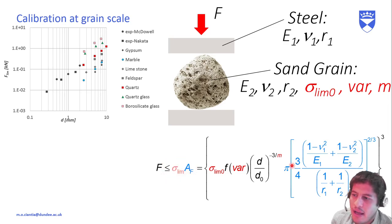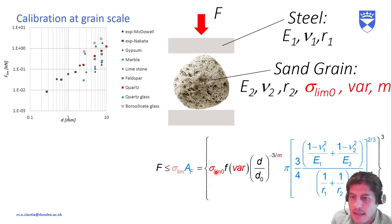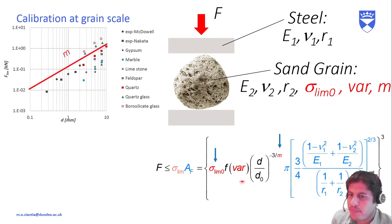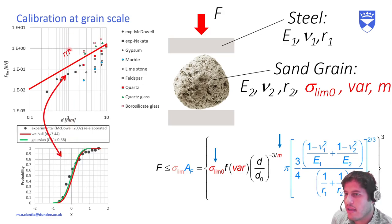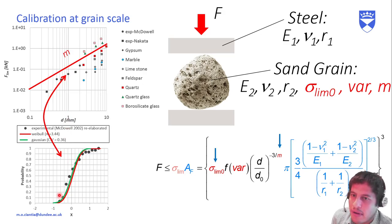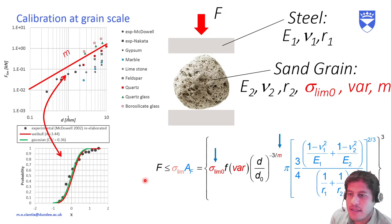Using Hertzian contact theory to describe the contact area between two spheres, we write the failure criterion as a strength times the contact area. The contact area between two elastic spheres governed by Hertzian theory has a specific form. There is an average strength at a reference diameter d₀, and a variability. The Weibull modulus m gives the slope in the graph, sigma_lim_zero gives the position, and at a fixed particle dimension, many tests give a distribution of strength introduced via a Gaussian distribution through a function f.